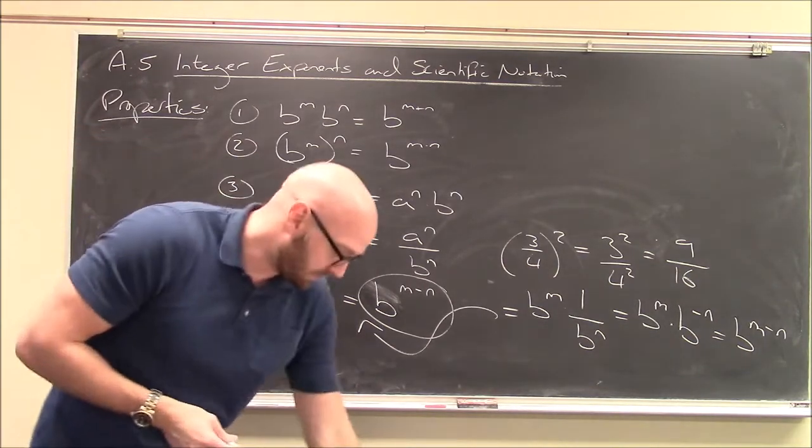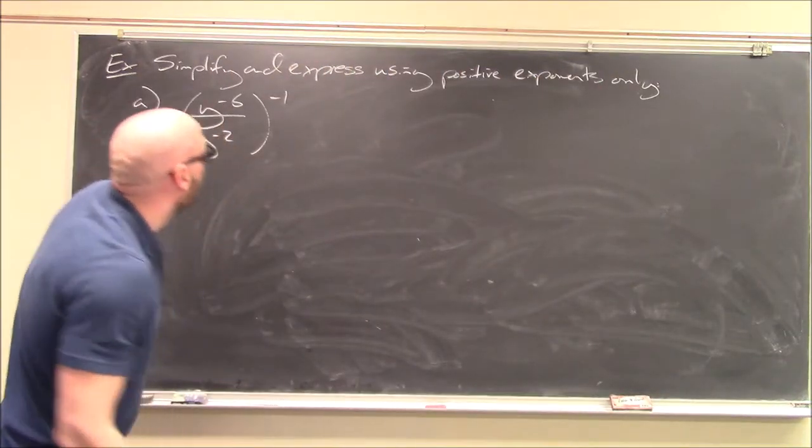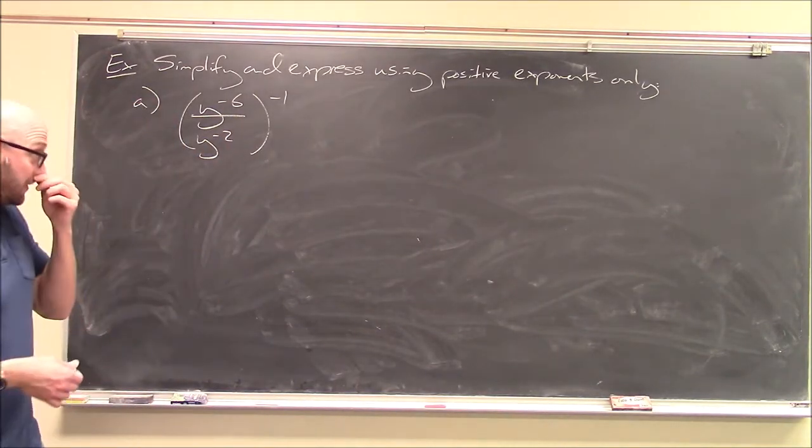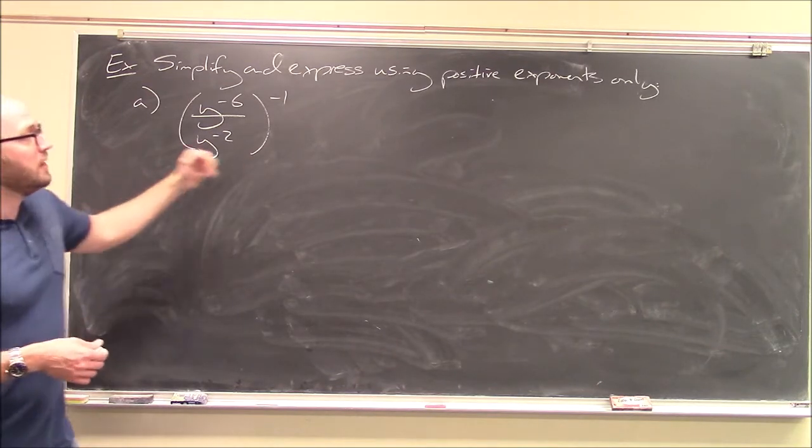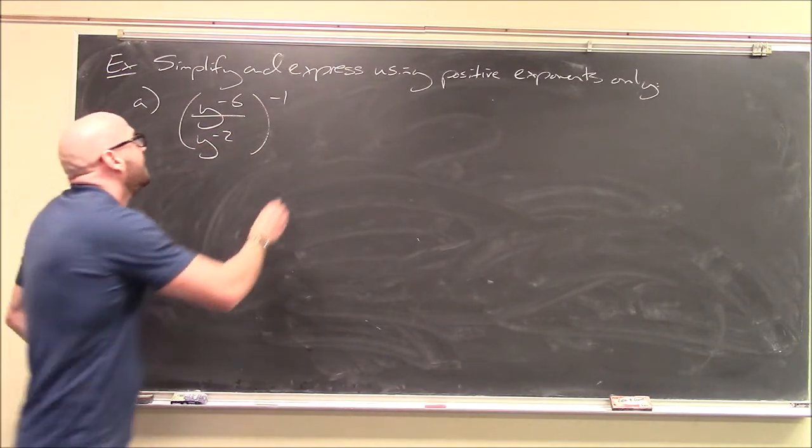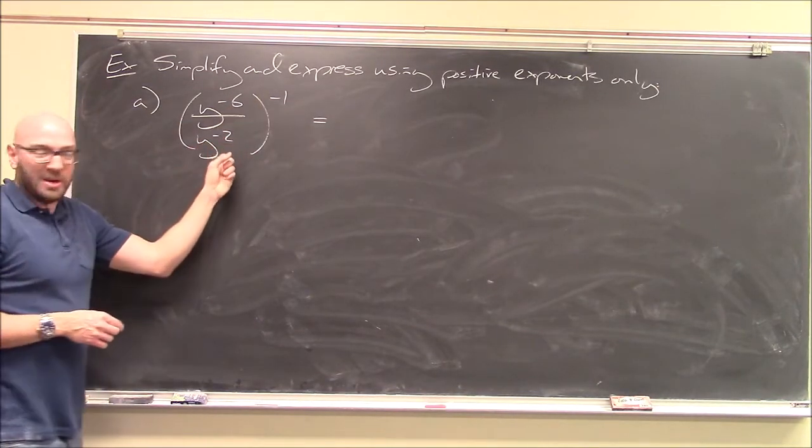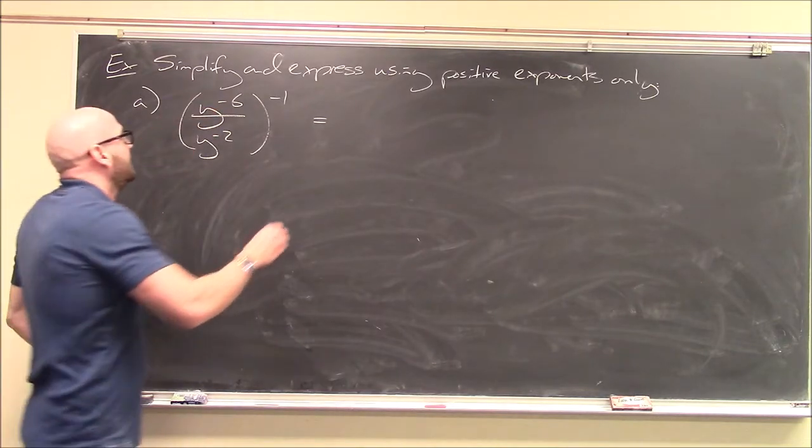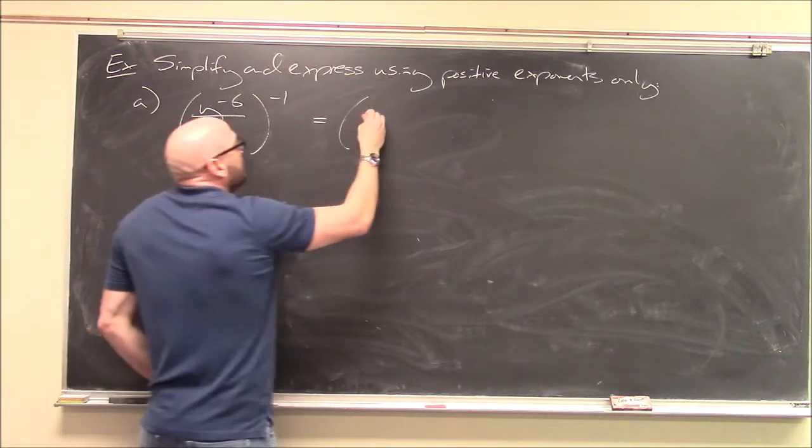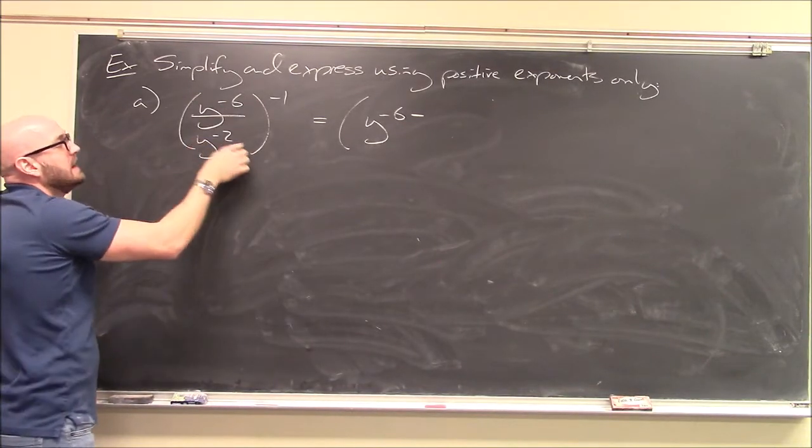So let's do some examples. Alright, first example is this one. We want to simplify this expression as much as we can. And My Math Lab often phrases it this way to indicate that we all get the same simplification. Write your answer using positive exponents only. So of course, this is not the answer because I have a whole bunch of negative exponents. There's two different ways you can proceed. You can actually distribute this minus 1 to the top and bottom right now. But I'm going to simplify the inside first.